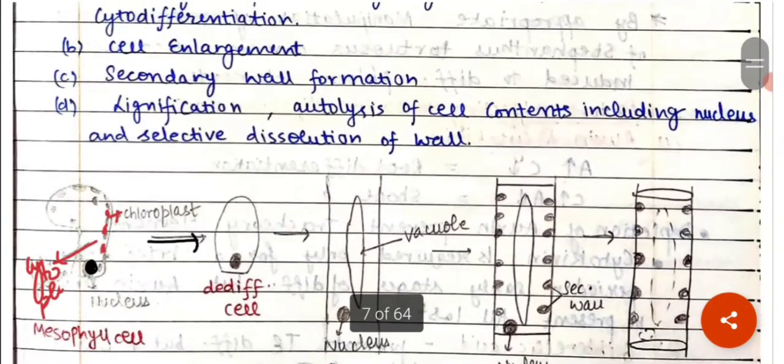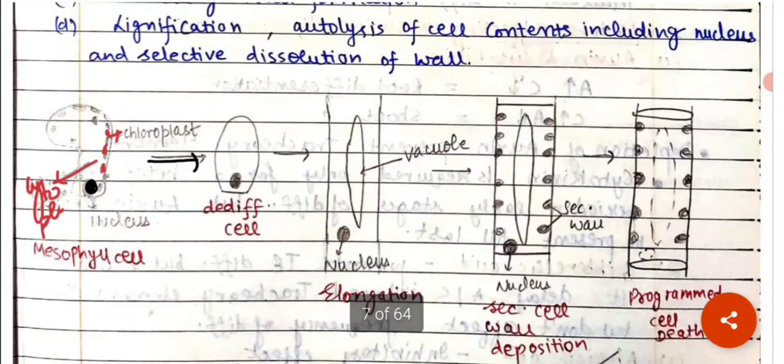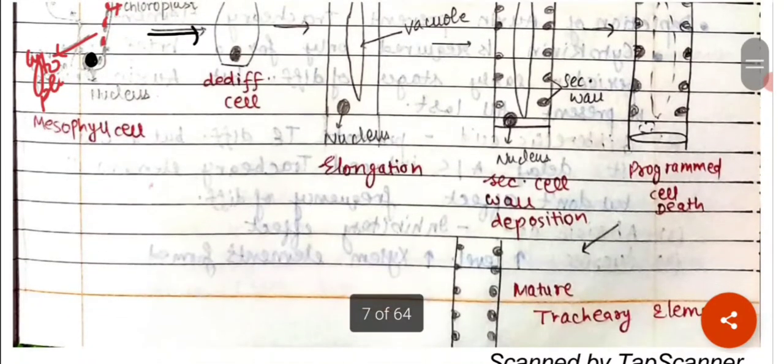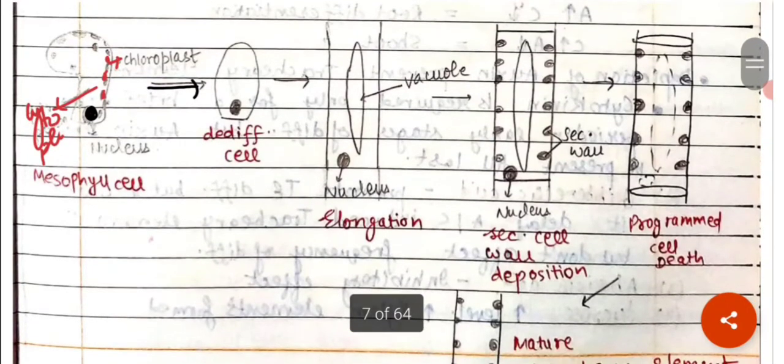Lignification, autolysis of the cell contents including the nucleus, and selective dissolution of the wall. The tracheid elements of xylem undergo differentiation. The cells lose contents of its protoplasm and cellulose. The cell wall gets lignified into the secondary cell wall. This increases its elasticity and allows the cell walls to withstand extreme pressure conditions during transportation of water to longer distances.